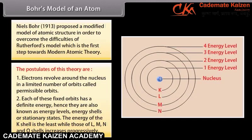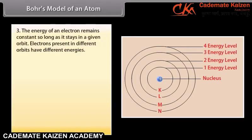The energy of the K shell is the least, while those of L, M, N and O shells increases progressively. 3. The energy of an electron remains constant so long as it stays in a given orbit. 4. Electrons present in different orbits have different energies.